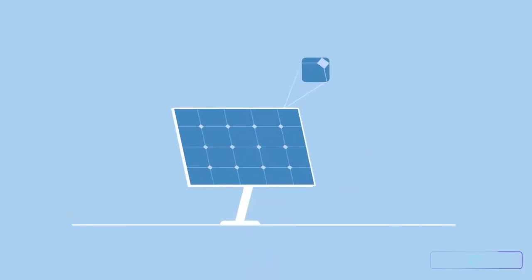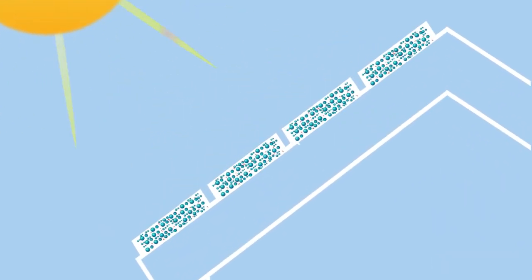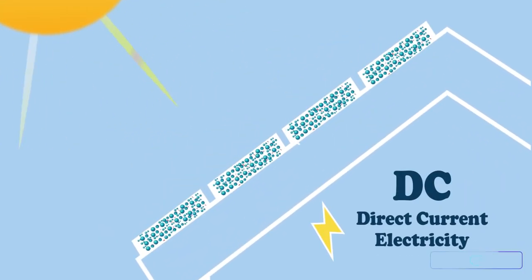Solar panels are made from an element called silicon. When sunlight hits a solar panel, electrons in the silicon begin to move, creating DC or direct current electricity.